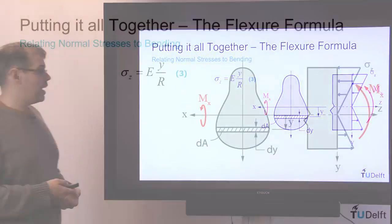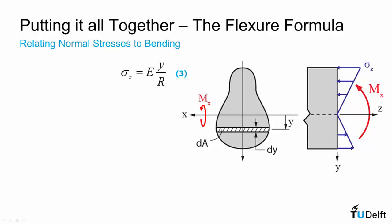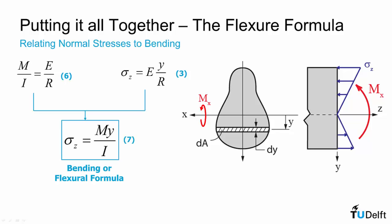So we found out in the previous video that sigma z is e times y over r. We found out today that m over i is equal to e over r. If we combine these two, we get what we know as the flexure formula or bending formula, and that's that the normal stress sigma z is equal to m times y over i.